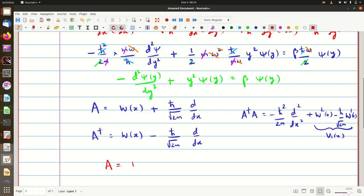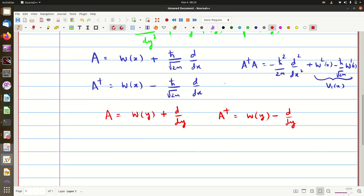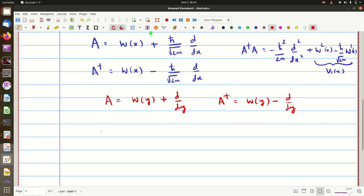Let us say A equal to w of y plus d by dy. So A dagger will be w of y minus d by dy. And if you are to form this product A dagger A, so A dagger A will give you minus d squared upon dy squared plus w square of y minus w dash of y.